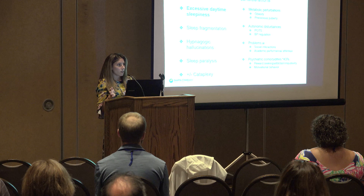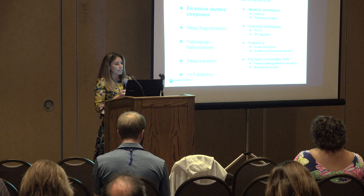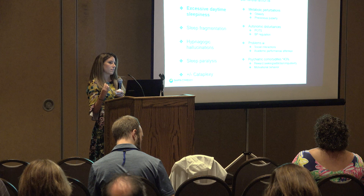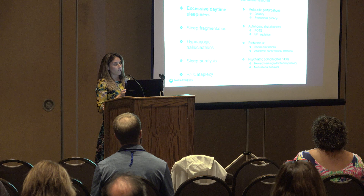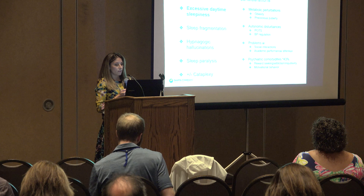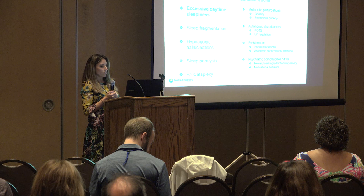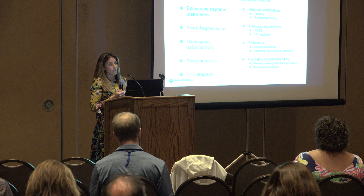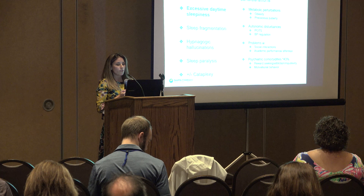The comorbidities I'm going to address are: metabolic perturbations — specifically obesity and precocious puberty; autonomic disturbances — your autonomic system is the part of the central nervous system that does things unconsciously, like breathing and heart rate. In narcolepsy, that includes POTS (positional orthostatic tachycardic syndrome) and blood pressure regulation issues. I'll also discuss problems with social interactions and academic performance or attention in kids, and psychiatric comorbidities. About 43% of children with narcolepsy have another psychiatric comorbidity, most commonly involving reward-seeking behavior, addiction, impulsivity, or depression, because of orexin deficiency itself.